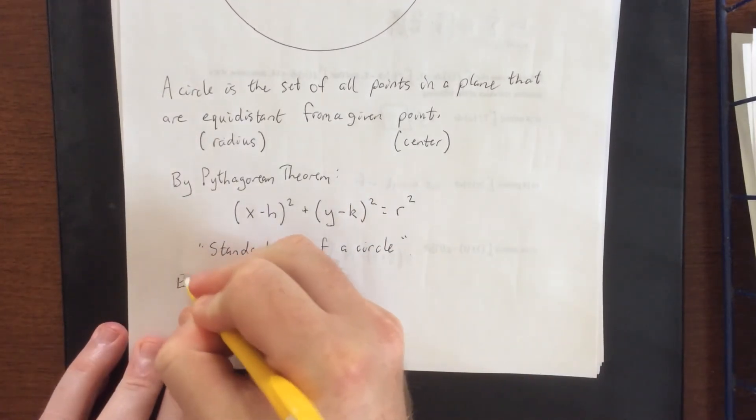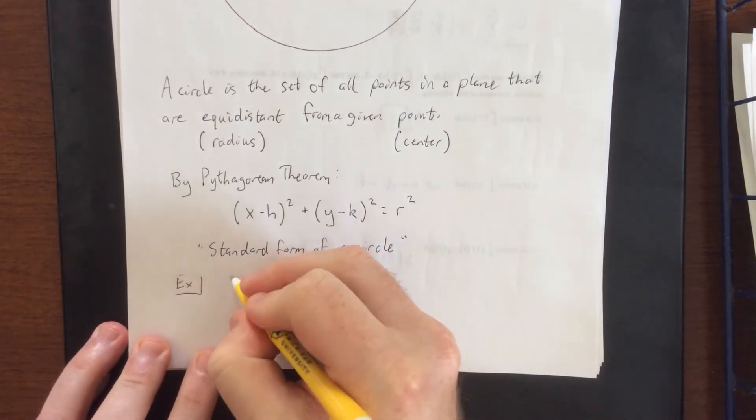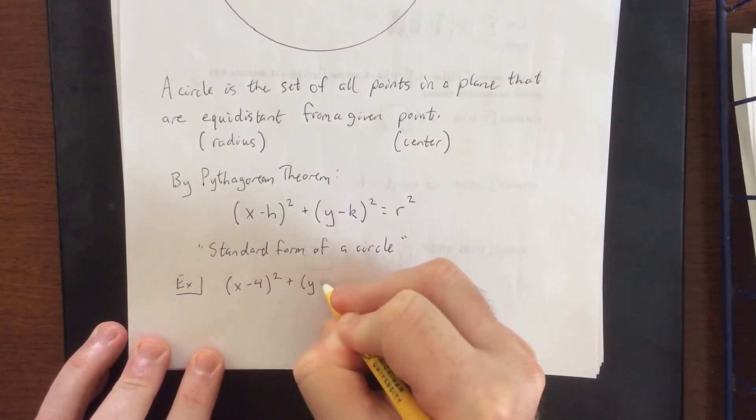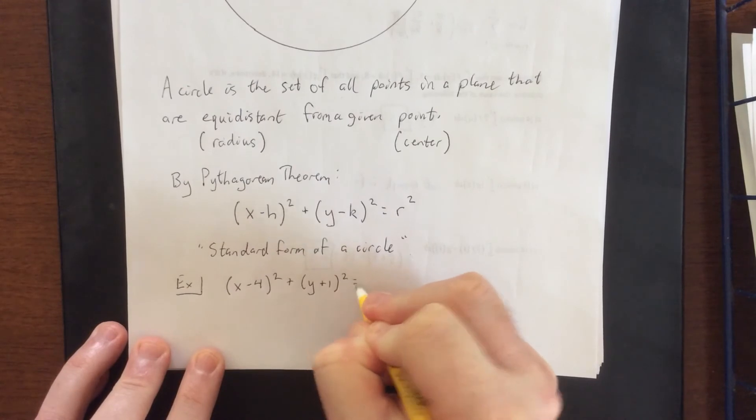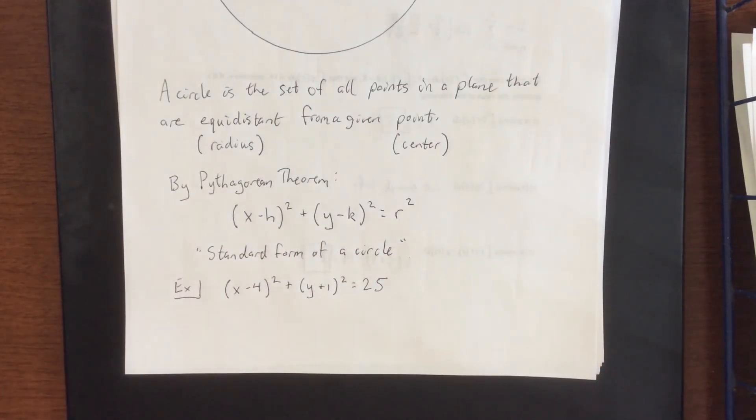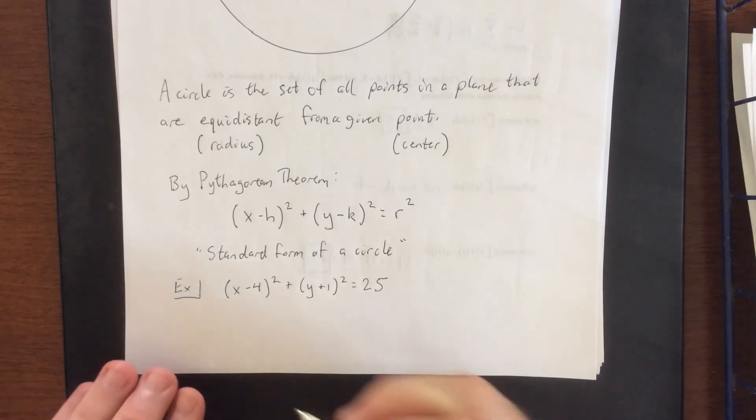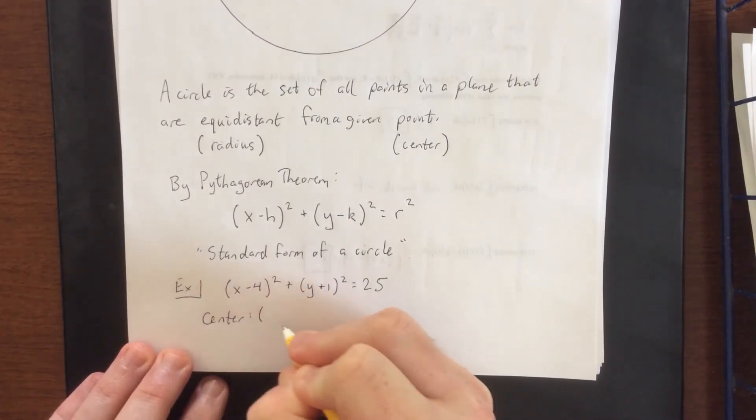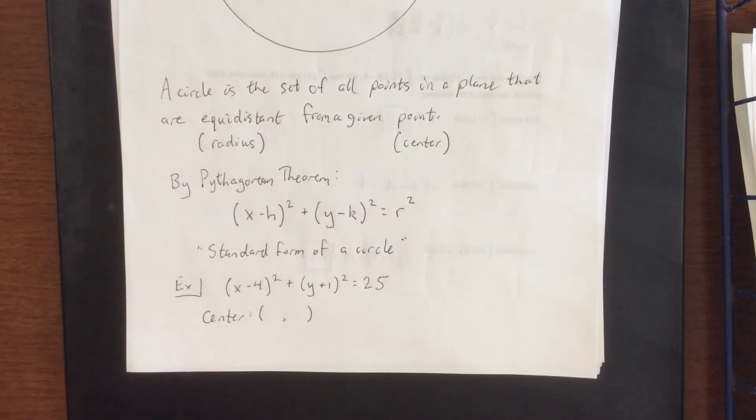For an example of a circle that is in standard form, we could do something like X minus 4 quantity squared plus Y plus 1 quantity squared is equal to 25. To obtain the center and the radius from this thing, you're posing the question, what number is being subtracted from each of the variables?